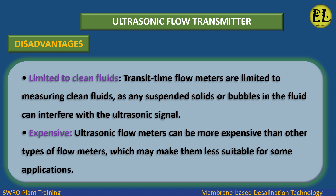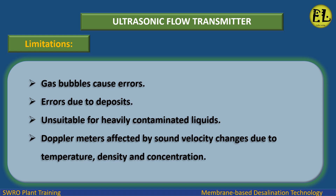Disadvantages: Transit time flow meters are limited to measuring clean fluids, as any suspended solids or bubbles can interfere with the ultrasonic signal. Ultrasonic flow meters can also be more expensive than other types of flow meters. Limitations include: gas bubbles causing errors, errors due to deposits, unsuitability for heavily contaminated liquids, and Doppler meters being affected by sound velocity changes due to temperature, density, and concentration.